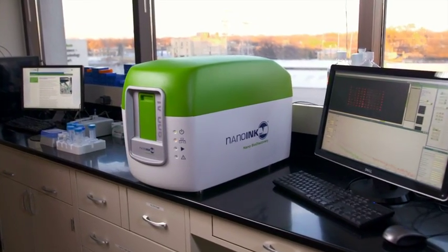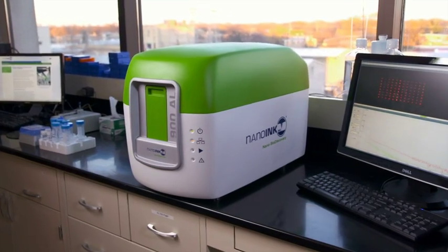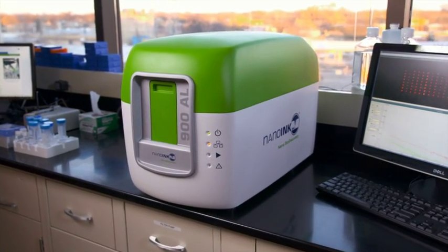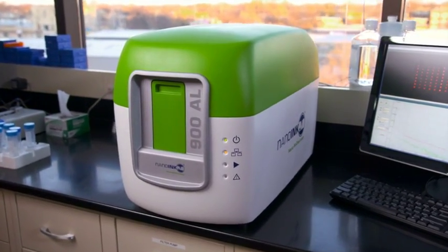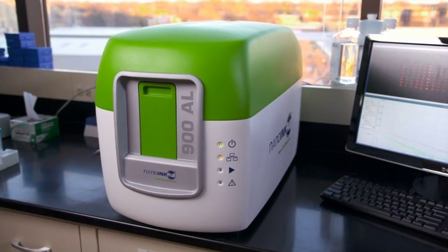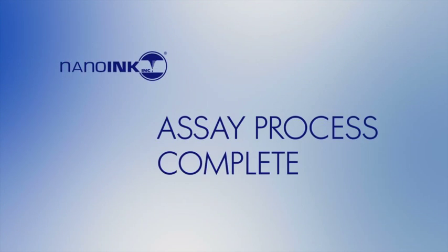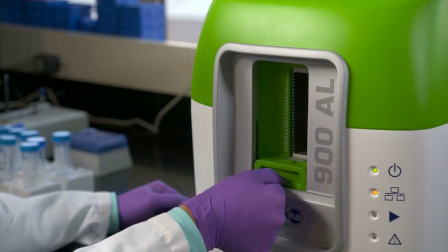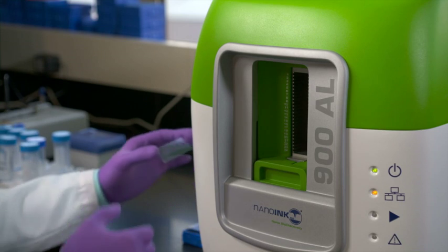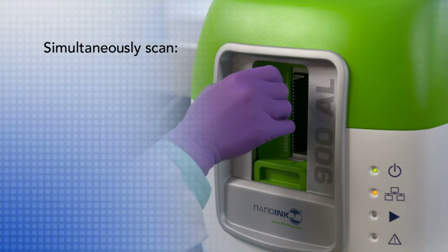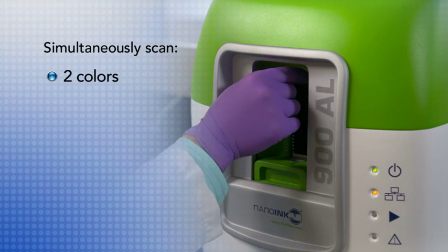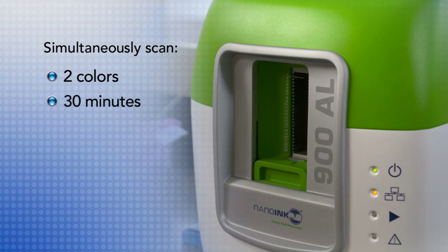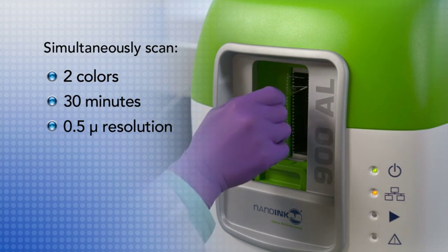Slides can be analyzed using any high-resolution fluorescent scanner, but NanoInk's NanoScan 900 delivers the best sensitivity. Equipped with a 24-slide autoloader, the confocal NanoScan 900 component can simultaneously scan two colors on an entire slide in just 30 minutes with 0.5 micron resolution.